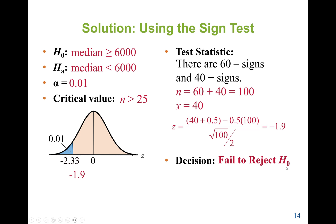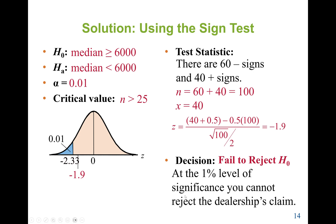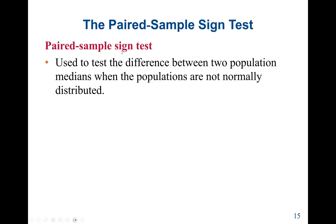We can reject H0 only if the test statistic is less than or equal to the critical value. Here, the test statistic −1.9 is greater than the critical value −2.33, so we fail to reject H0. At the 1% level of significance, we cannot reject the dealership's claim.